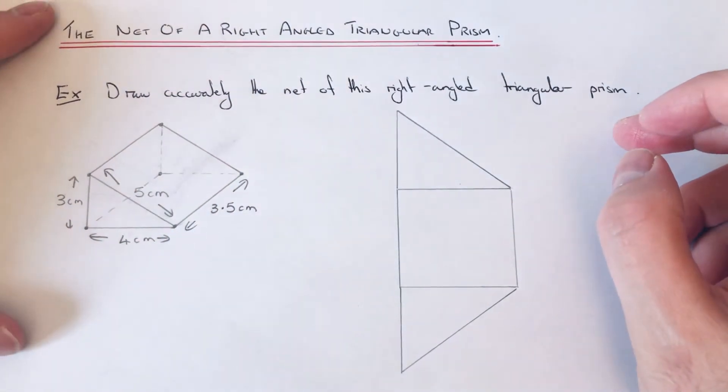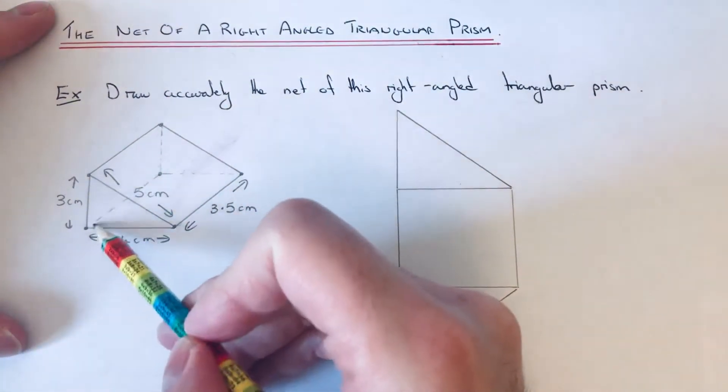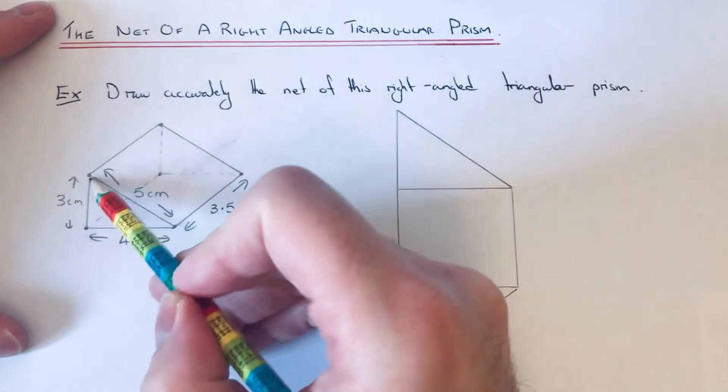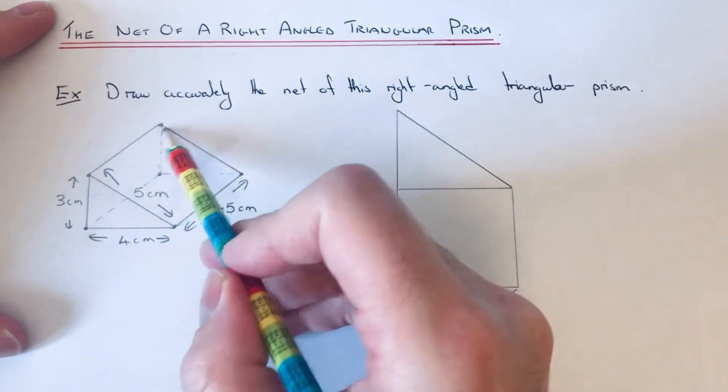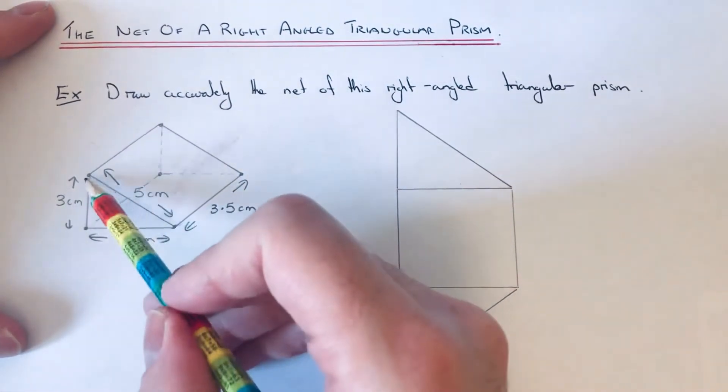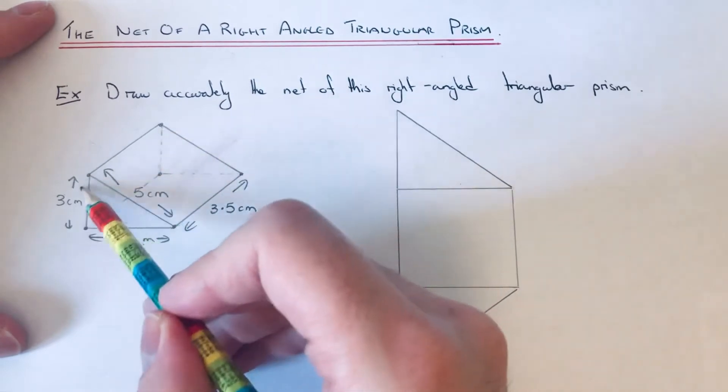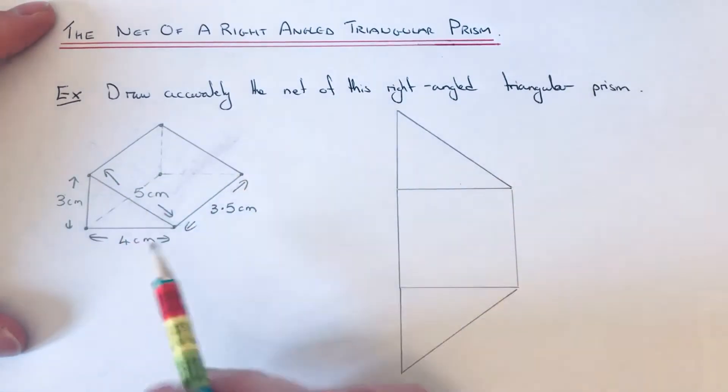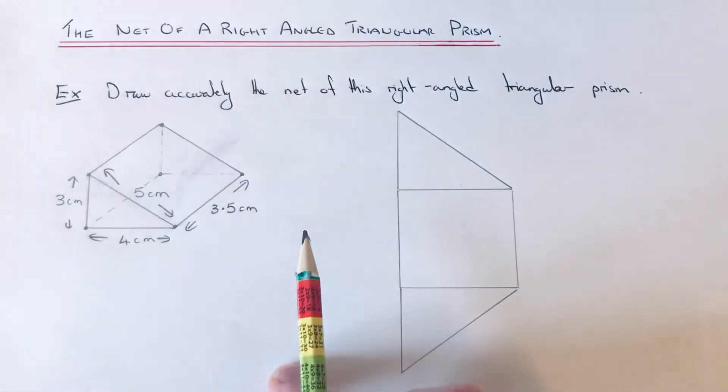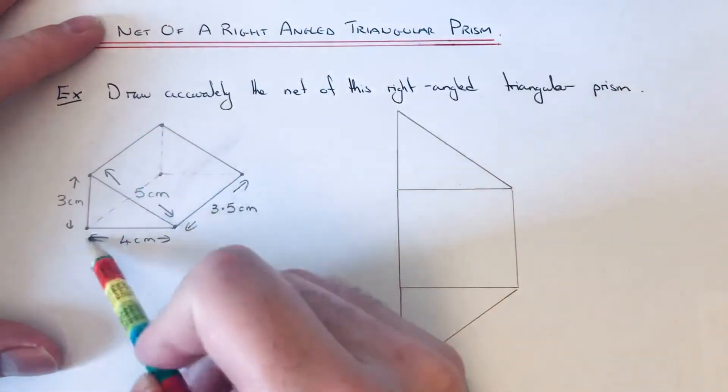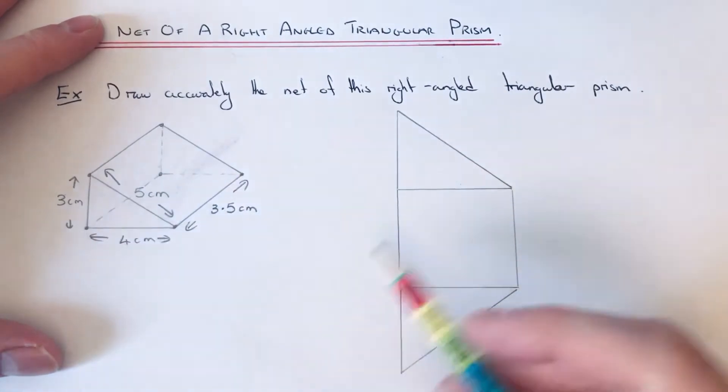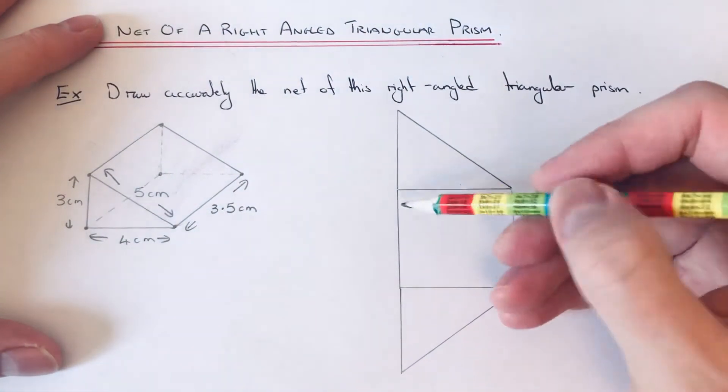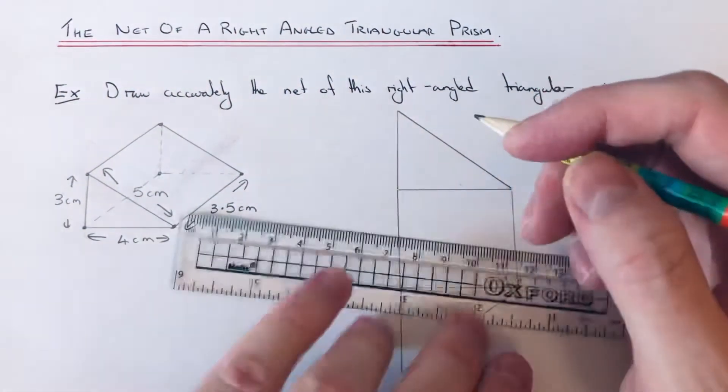We just need to do the face at the back of the prism and the sloping face. So let's do this one at the back first. This is a three by five rectangle—sorry, not three by five, it's three by 3.5. So I've already got 3.5 here, so we just need to go